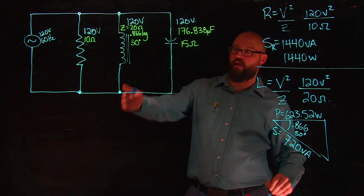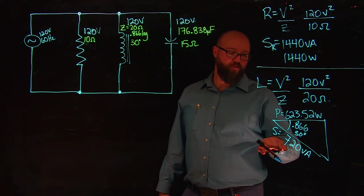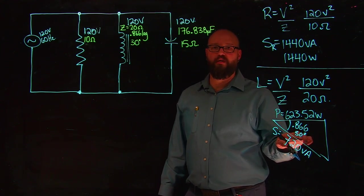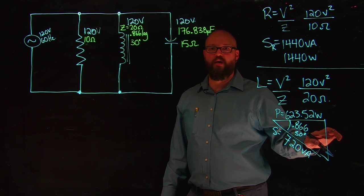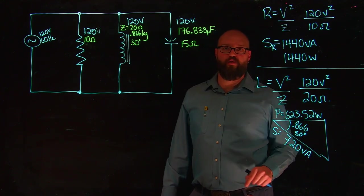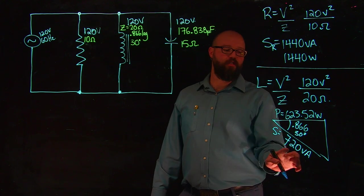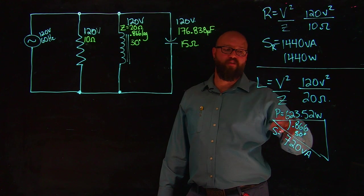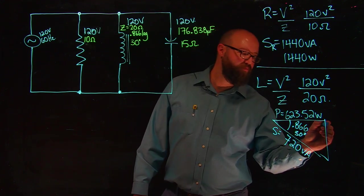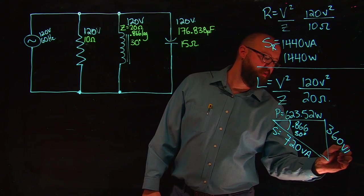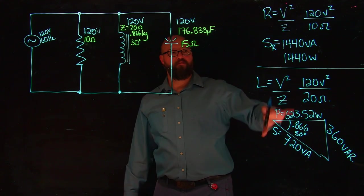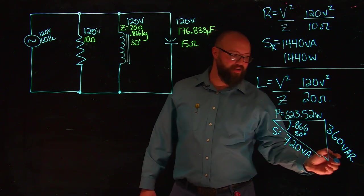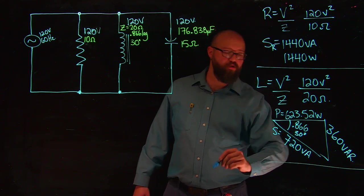720 VA times the power factor of 0.866 gives us a power of our coil of 623.52 watts. And if I arc cosine my power factor, we have it written right here, we have a 30 degree phase angle. If I take 720 VA and I multiply it by the sine of 30 degrees, I'm going to get my opposite side. Or, alternatively, I could transpose my Pythagorean theorem and know that 720 VA squared minus 623.52 squared, if I square root that answer, I should end up with 360 VARs. Now we have the power component for our resistor, we have the power component for our inductor, and the last one we're going to do is for our capacitor.